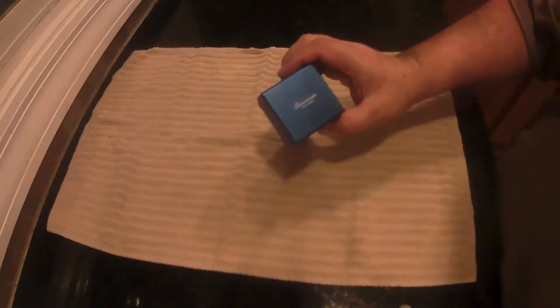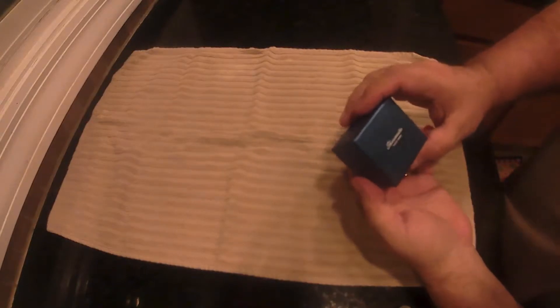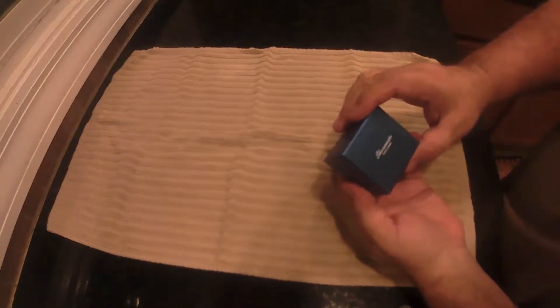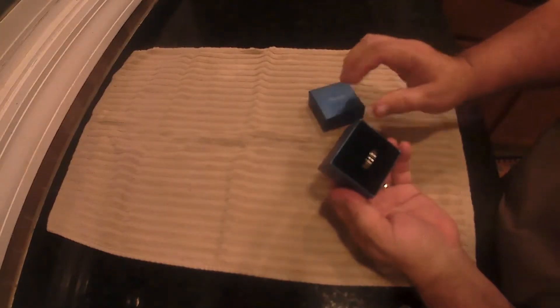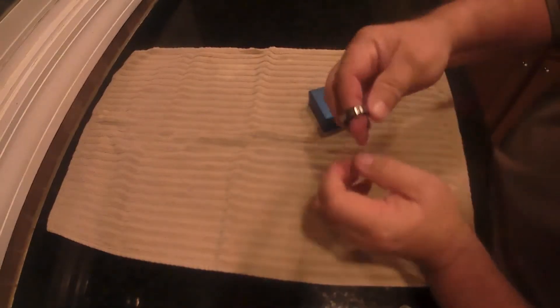This is the SureMaster Black Tungsten Carbide Engagement Ring. This is an 8mm miniature. This one is two-toned, black and silver. It's got a brushed finish.